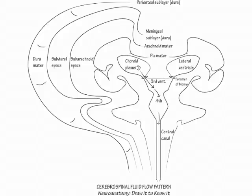The central canal is actually obliterated by middle adulthood, so the main manner in which the spinal cord and rest of the nervous system receives cerebrospinal fluid is actually from the subarachnoid space, which we will draw next.